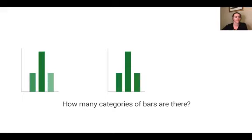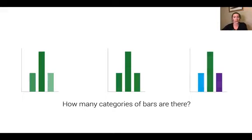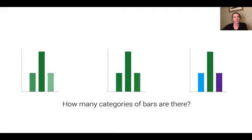Whereas if I do something a little more drastic — let's say I change my bars such that I have a blue bar, a green bar, and a purple bar — our readers are much more likely to understand that there are three different categories of bars present. So the way that I'm manipulating color in these different visualizations is going to change the kinds of interpretations and takeaways that people draw about our data.